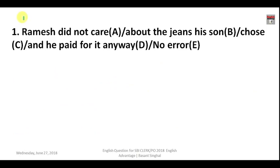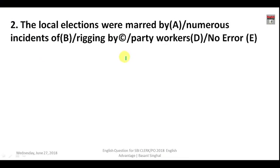Question number one is a spotting error question. The sentence is: 'Ramesh did not care about the jeans his son chose and he paid for it anyway.' On one hand we say Ramesh did not care, and on the other hand he paid anyway — these are two contrasting sentences. Two contrasting sentences are connected with 'but' or 'however', not 'and'. So 'and' is wrong here, and the answer is D.